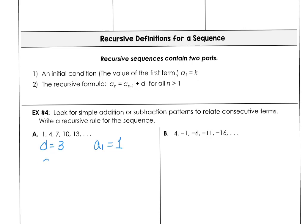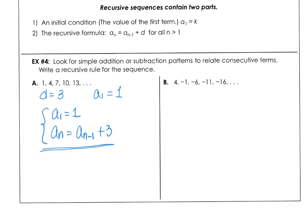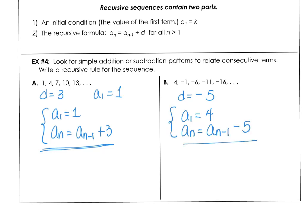To write this as a recursive rule: a sub 1 is 1, and a sub n is a sub n minus 1 plus 3. That's our recursive rule. In part B, the difference is subtracting 5, and a sub 1 is 4, so our recursive formula is the term before minus 5.